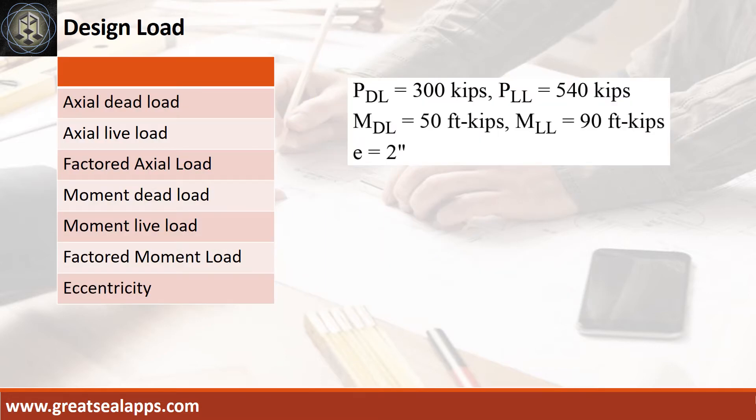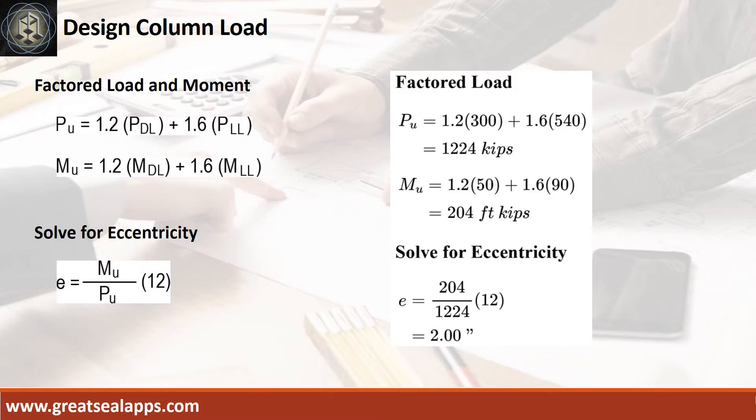The column carries an axial bending load with axial dead load of 300 kips and axial live load of 540 kips, moment dead load of 50 foot kips and moment live load of 90 foot kips. Given axial dead load equals 300 kips and axial live load equals 540 kips, the factored axial load is 1,224 kips. Given moment dead load equals 50 foot kips and moment live load equals 90 foot kips, the factored moment is 204 foot kips for an eccentricity of 2 inches.